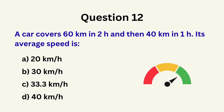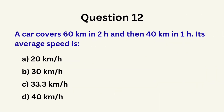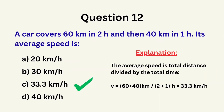Question 12: A car covers 60 kilometers in 2 hours and then 40 kilometers in 1 hour. Its average speed is... A. 20 km/h, B. 30 km/h, C. 33.3 km/h, D. 40 km/h. The correct answer is C: 33.3 kilometers per hour.